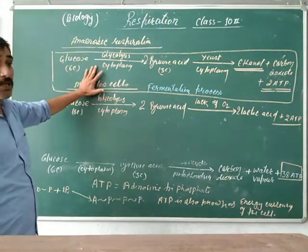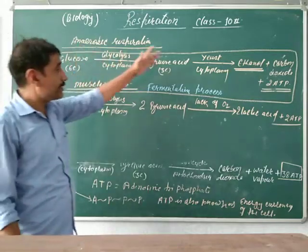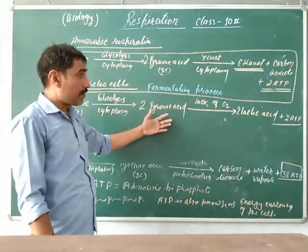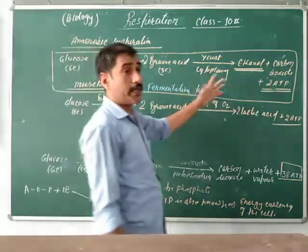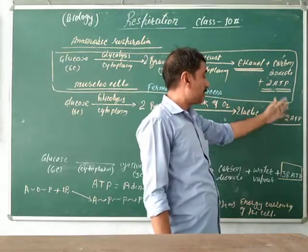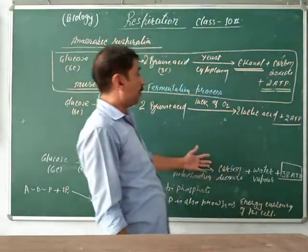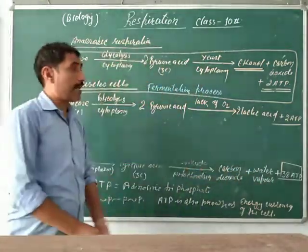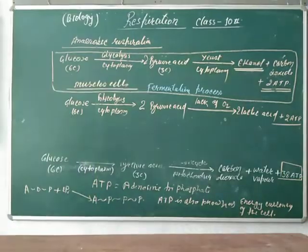The incomplete combustion of glucose molecules in the muscle cell gives only 2 ATP molecules, which is very less compared to aerobic respiration. Thank you.